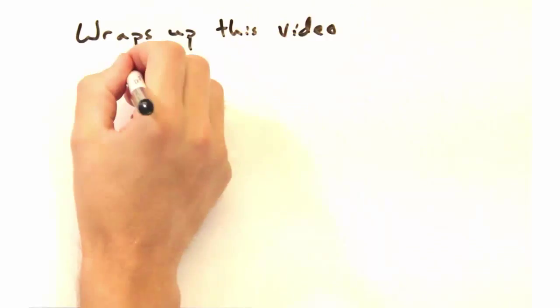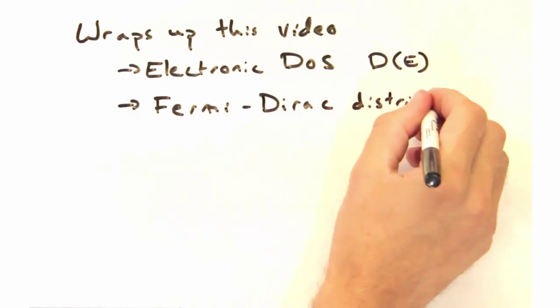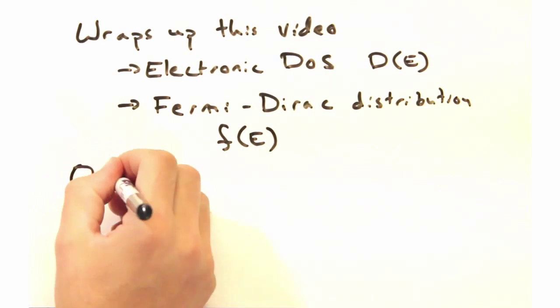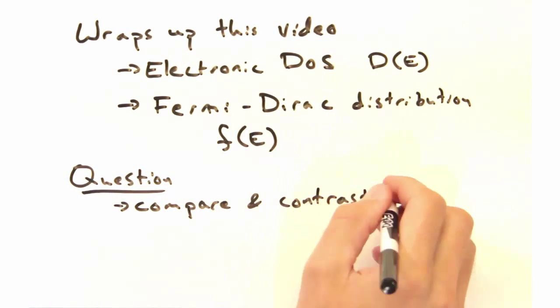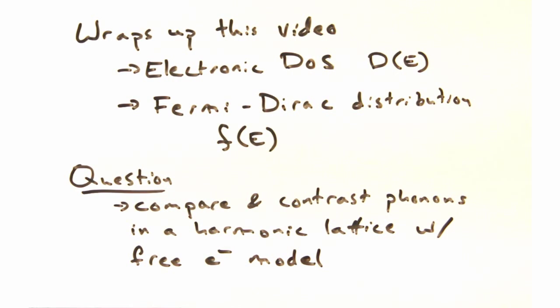Well that wraps up today's video. We hope you enjoyed the short description of electronic density of states and the Fermi-Dirac distribution. Here's a question which should help make the transition from phonons to electrons a little smoother. Compare and contrast phonons in a harmonic lattice with the free electron model.